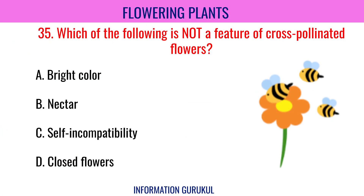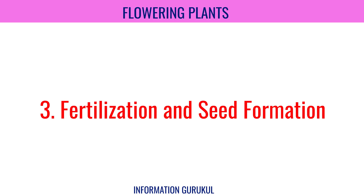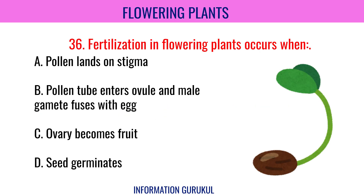Which of the following is not a feature of cross-pollinated flowers? Closed flowers. Fertilization in flowering plants occurs when the pollen tube enters the ovule and the male gamete fuses with the egg.